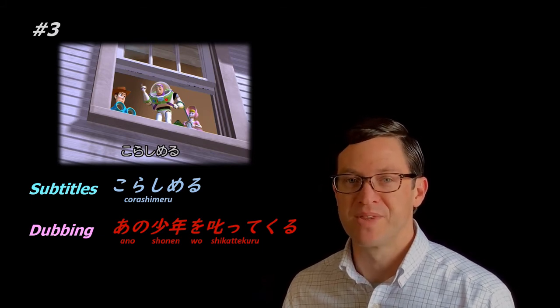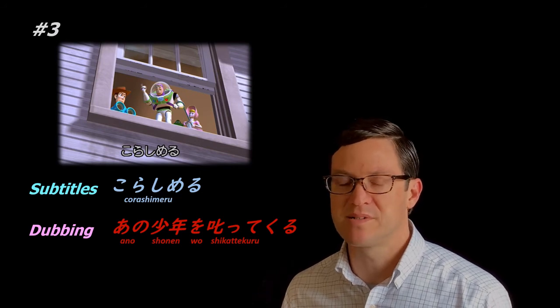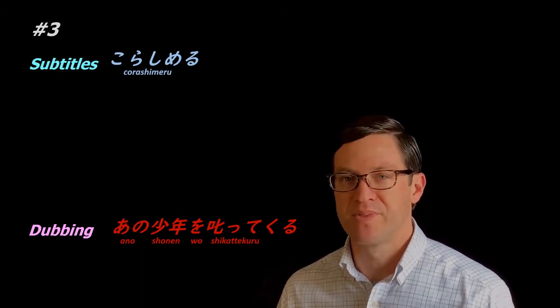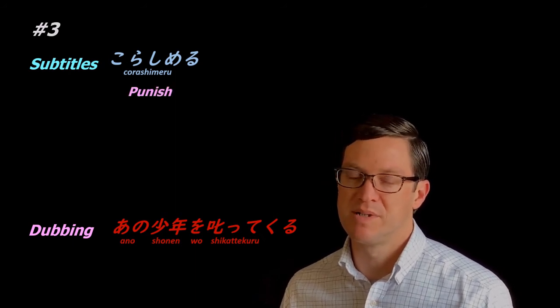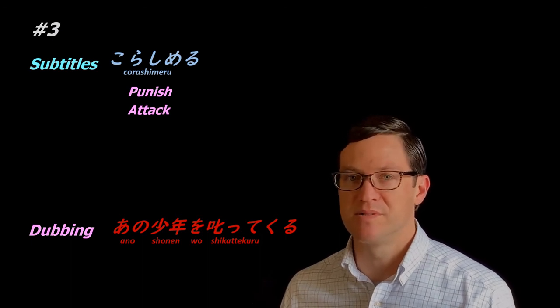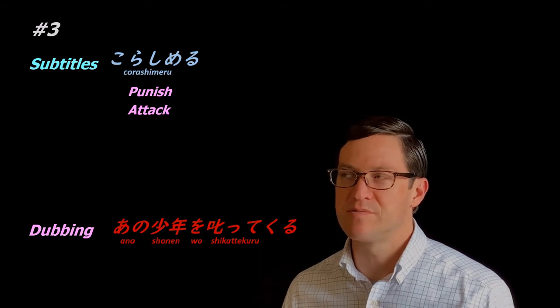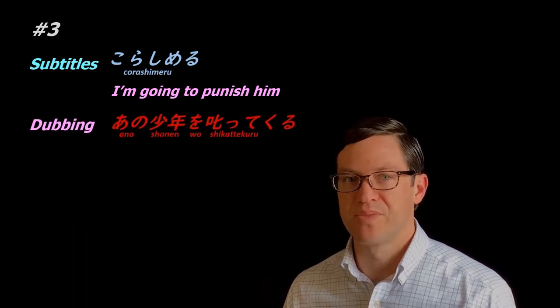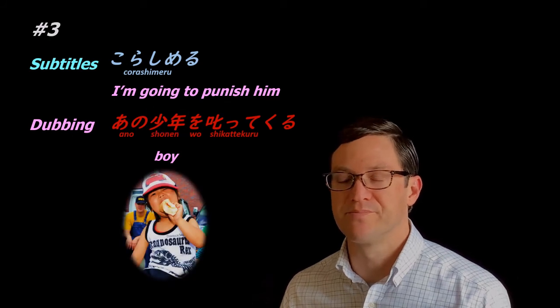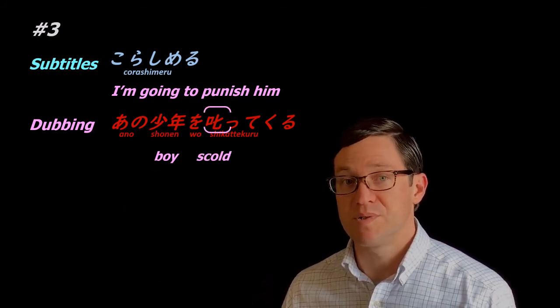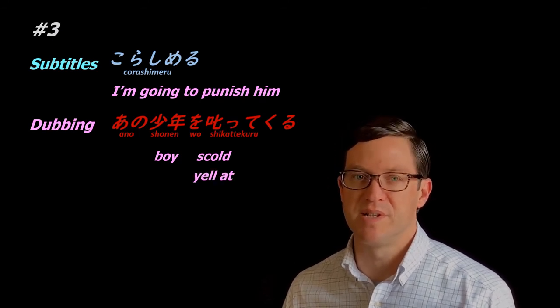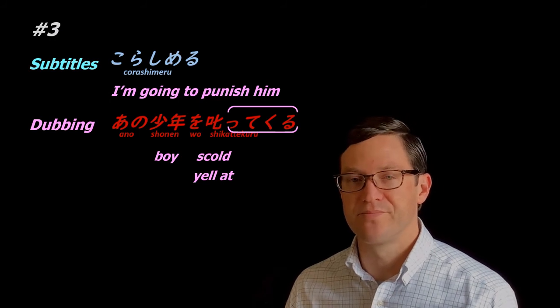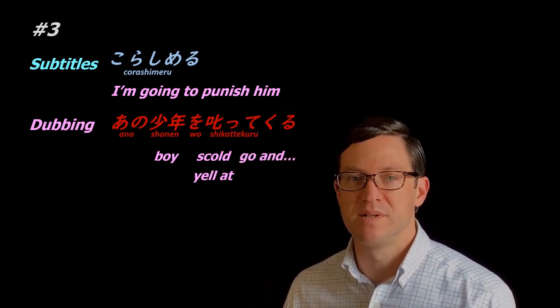So, as you can see, the subtitles are clear and direct, but the dubbing has a little more character and style. Korashimeru is just one word, but it's really difficult to translate. It basically means to aggressively punish someone. It's similar to attacking someone physically or with words, because they did something bad. If I have to choose one word, maybe I would say, I'm going to punish him. And in the dubbing, shonen means a little boy, or just a boy. And shikaru means to scold. But sometimes we just say yell at. Especially children say this. Scold is a word used by adults. And when you use tekuru, it's good just to say go and do something.